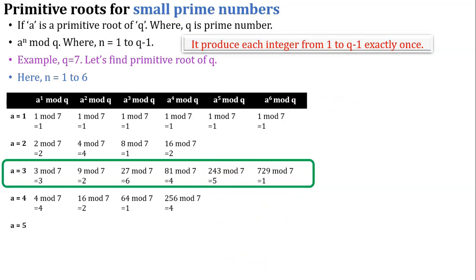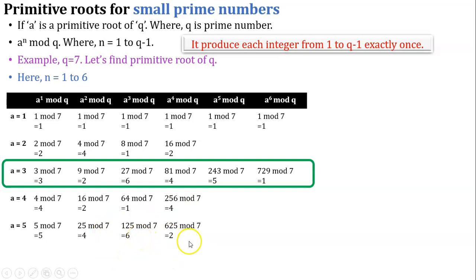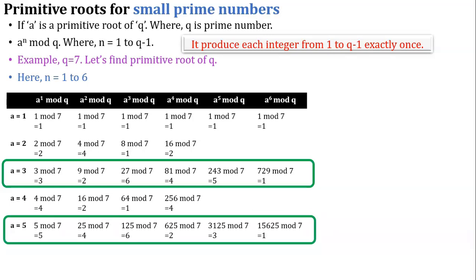For a equals 5: first equation gives 5, second gives 4, third gives 6, fourth gives 2, fifth gives 3, and sixth gives 1. The condition is satisfied because we get all numbers from 1 to q-1 exactly once. So 5 is also a primitive root of 7.